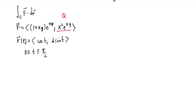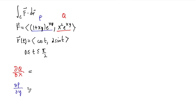The component functions of our vector field are called P and Q. To check if a vector field is conservative, we compute dQ/dx and dP/dy, and take their difference. If the difference is zero, the vector field is conservative. Starting with dQ/dx — this is going to be a product rule — we get 2x·e^(xy) + x²y·e^(xy).